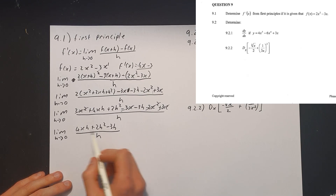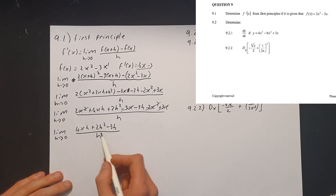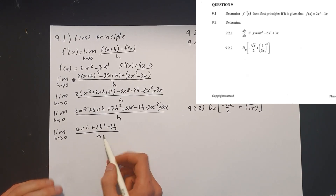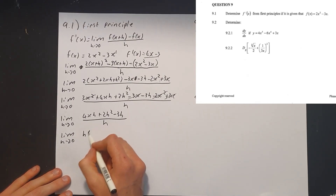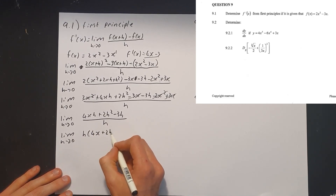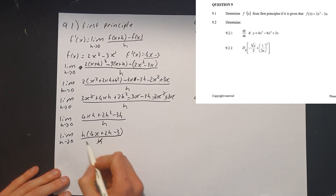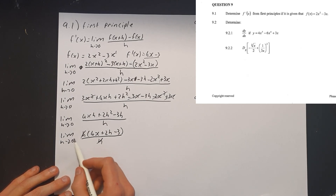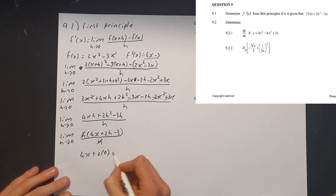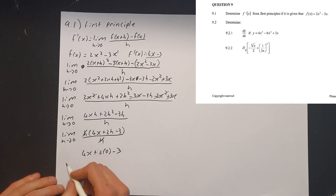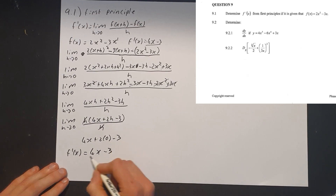Every term at the top has an h, so we take h out as a common factor to cancel with the h at the bottom — because we can't divide by zero when we substitute from the limit. So the limit as h tends to 0 of h(4x plus 2h minus 3), divided by h. The h's cancel. Now substitute zero wherever we see h: 4x plus 2 times 0 minus 3. Therefore f prime of x equals 4x minus 3.